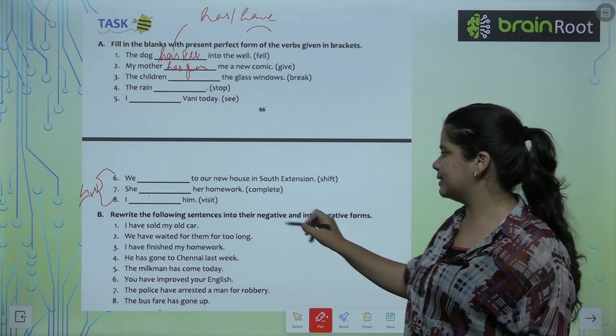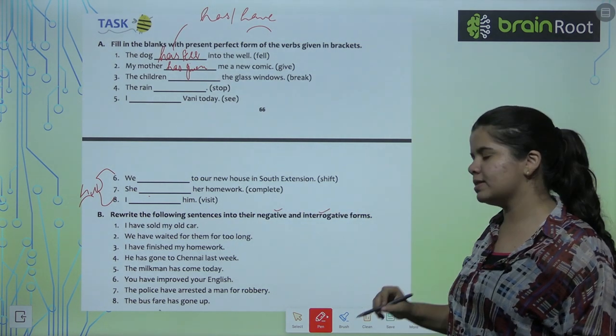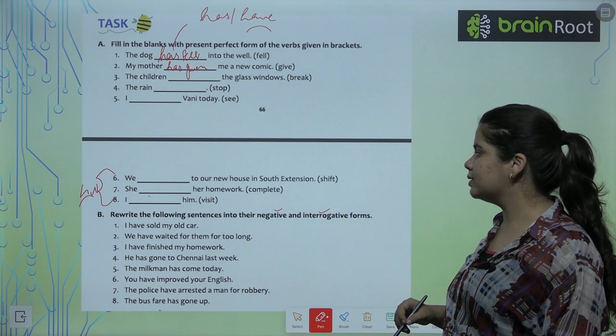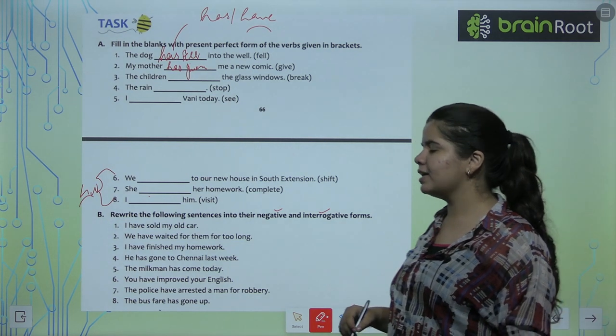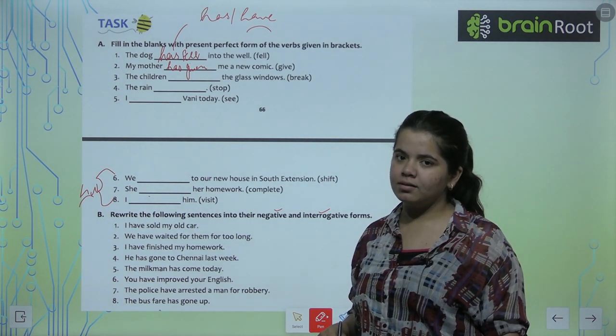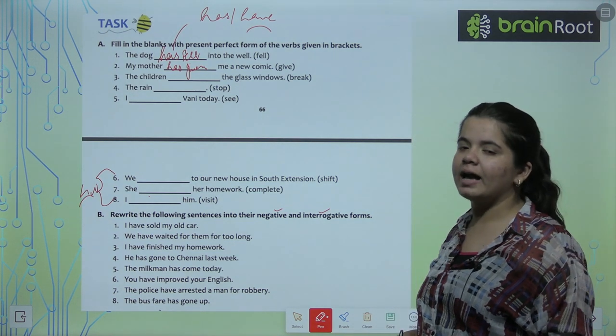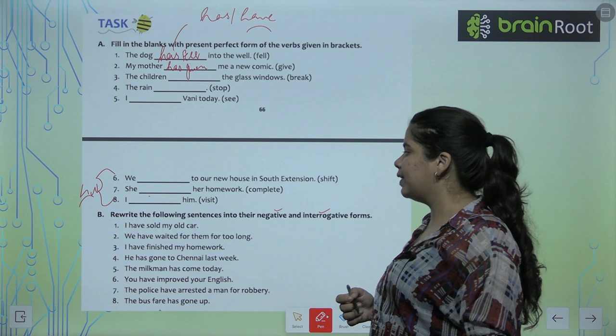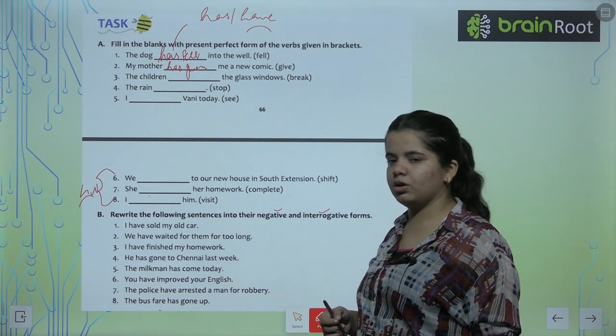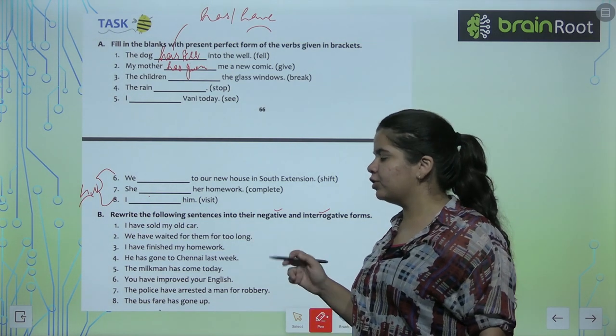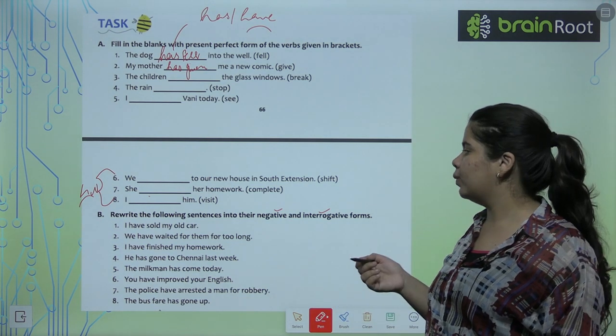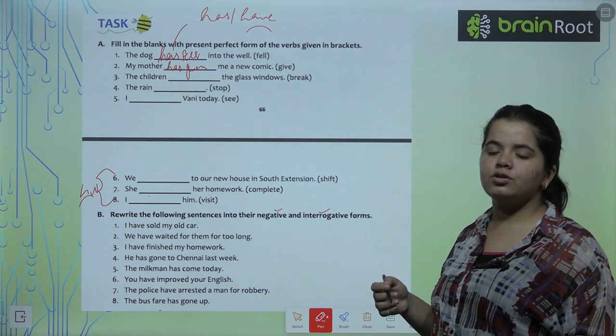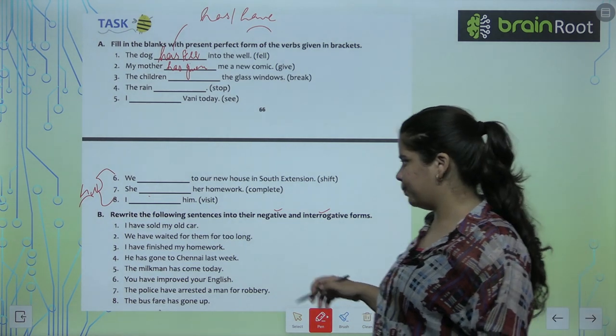Now, we have to relate the sentences into negative and interrogative forms. I have sold my old car. Have I sold my old car? I have not sold my old car. That's negative. Now, we have waited for them for too long. Have we waited for them for too long? Interrogative. We have not waited them for too long? Negative.